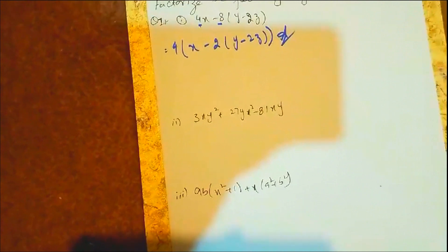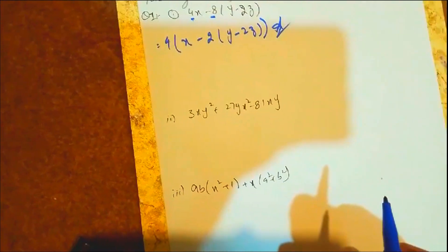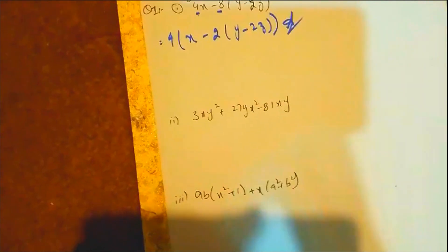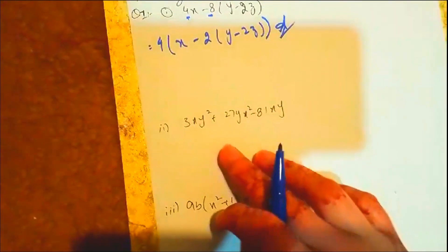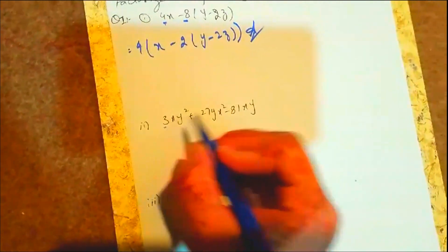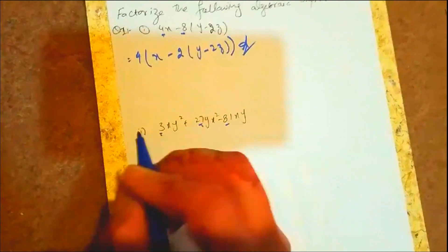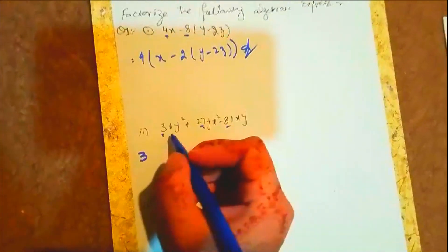We have question number 1 part 2: 3xy² + 27yx² - 81xy. First of all, what is common here? Here is 3, this is 27, and this is 81. 3 table is 27 and 81, so there is 3 common.